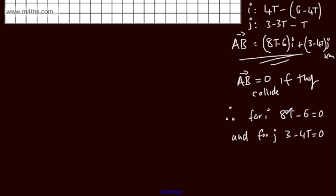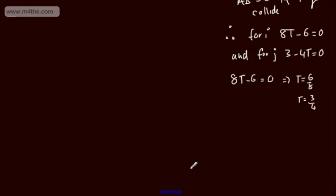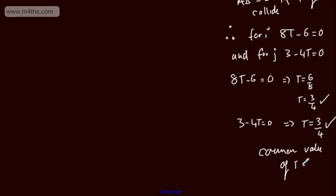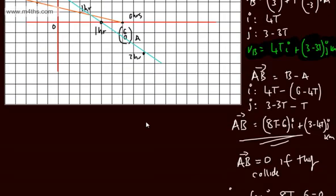From 8t minus 6 equals 0: adding 6 and dividing by 8 gives t equals 6/8, so t equals 3/4. From 3 minus 4t equals 0: t equals 3/4. We have a common value of t — so the boats will collide. t equals 3/4 hours after midday means the collision occurs at 12:45.